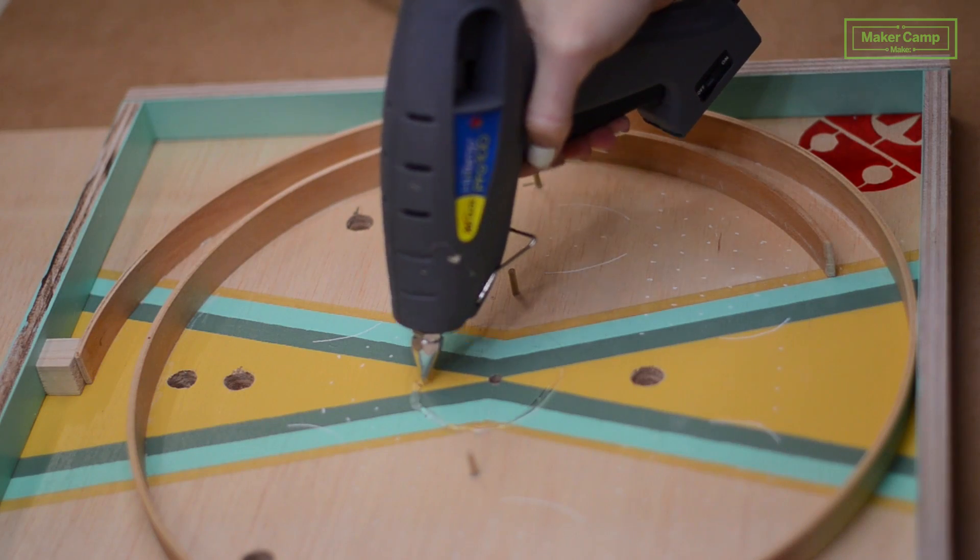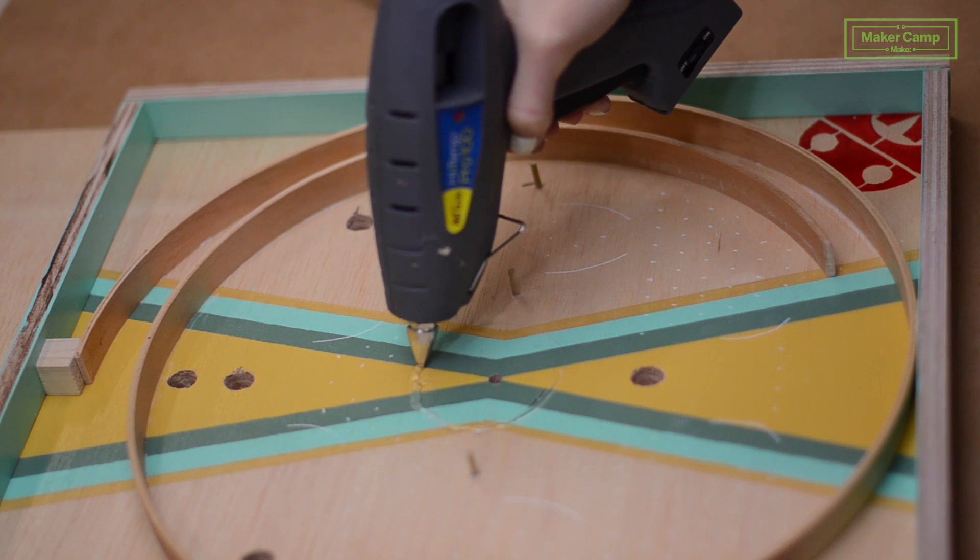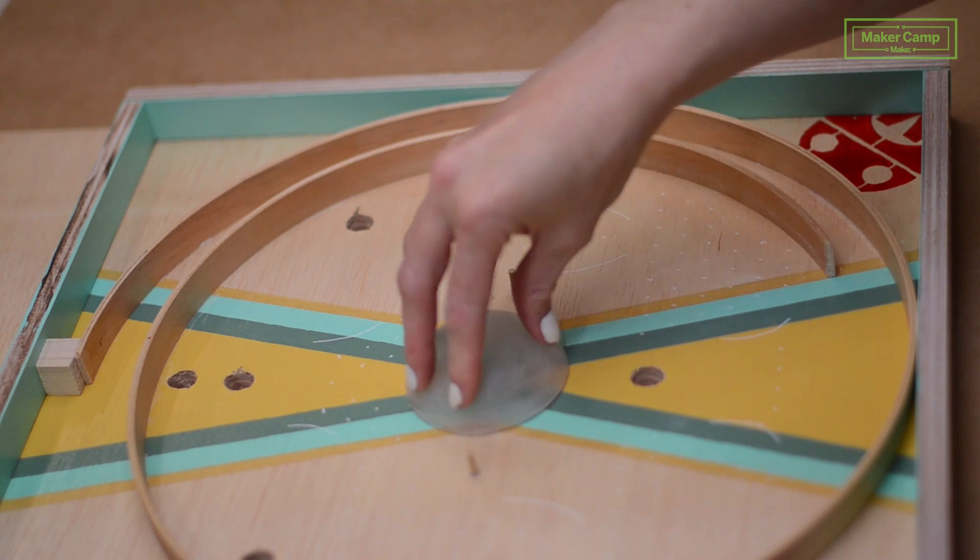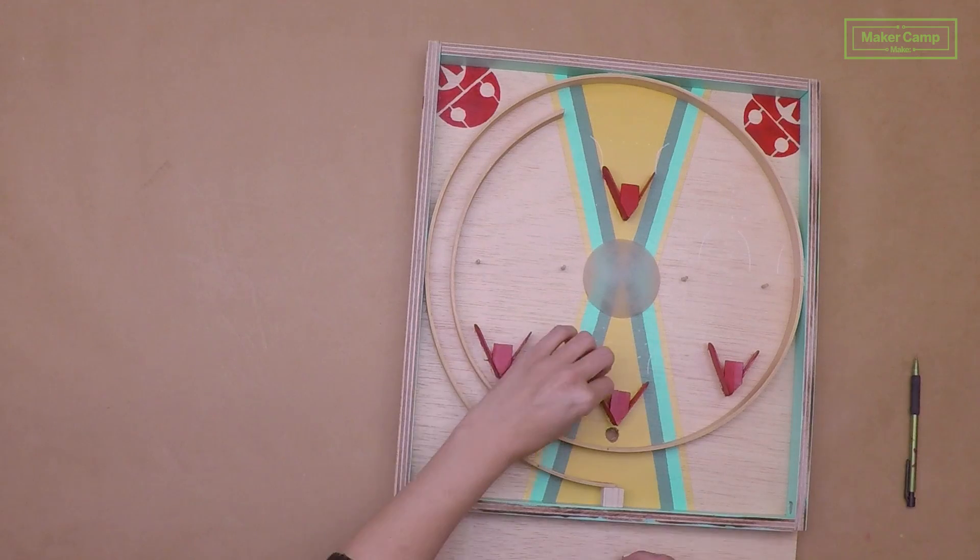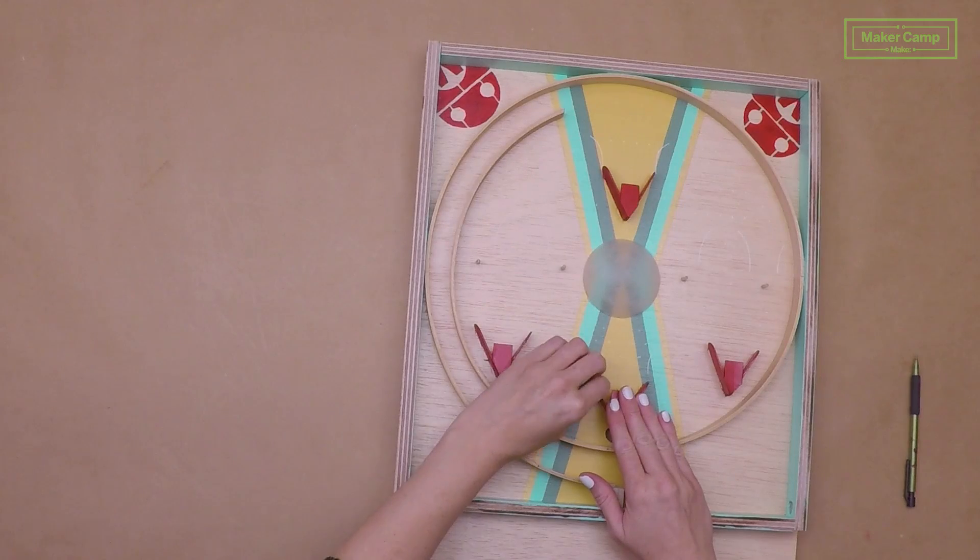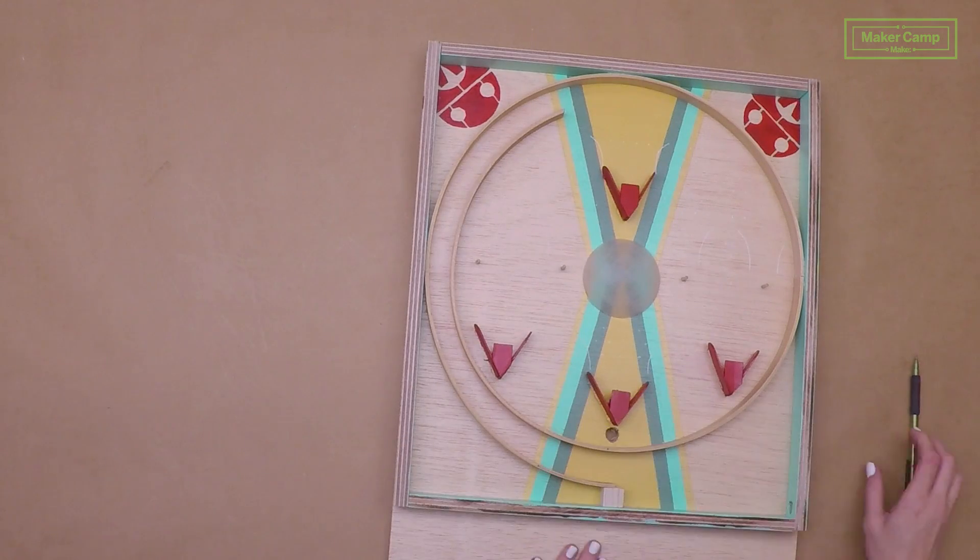Now for this center spot, we're actually going to add half of an acrylic Christmas ornament. You can pretty much use anything for this. You could even use the bottom of a water bottle. And next, we'll glue on our winning pockets. Make sure that you line up the bottom of the winning pocket ramp to the bottom of your holes.